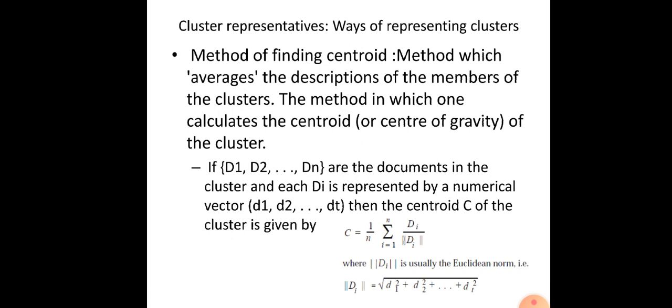The centroid c can be calculated by (1/n) × Σ(i=1 to n) di divided by the Euclidean norm of di. The Euclidean norm can be calculated as the square root of d1² + d2² + ... + dt². Here 1 to t are the index terms or words present in each document.